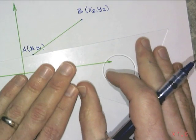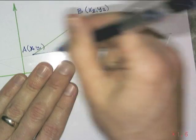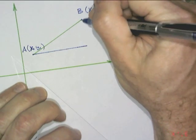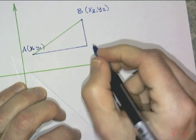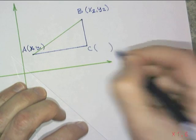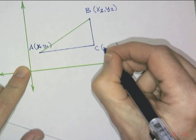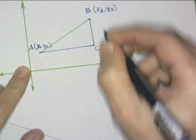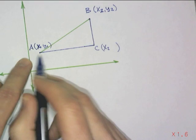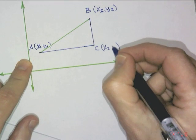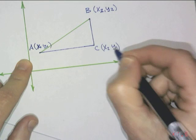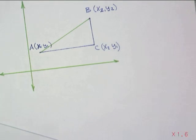We are going to make our slope triangle. Coordinates of C directly below the B has the same x value as B. And directly across from A has the same y value as A.